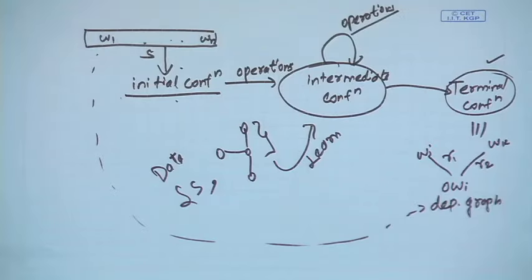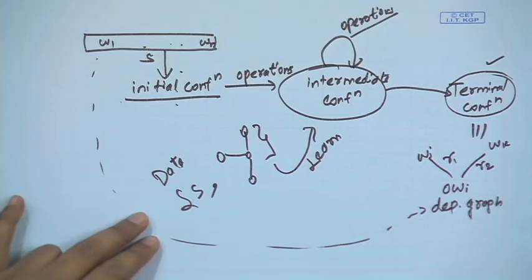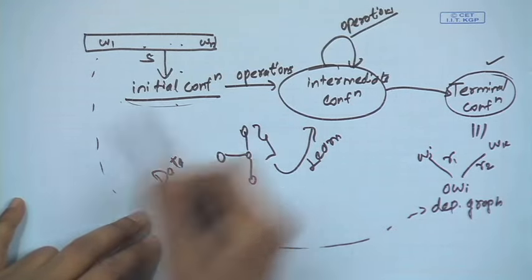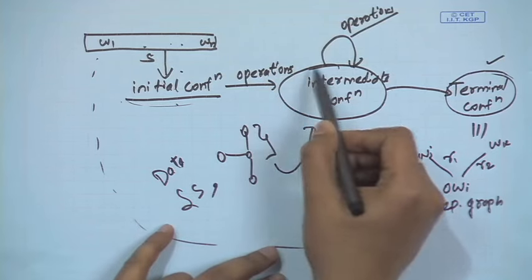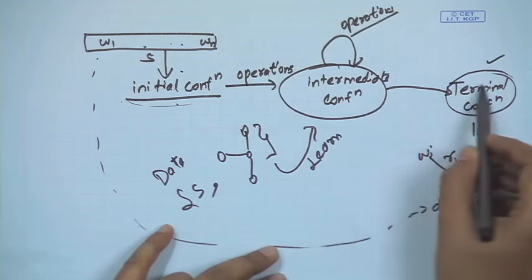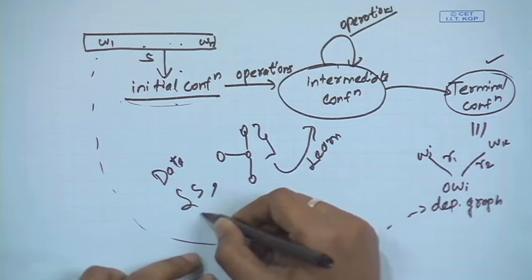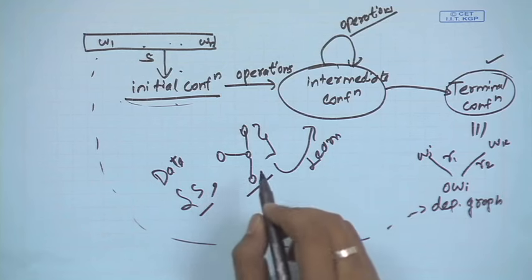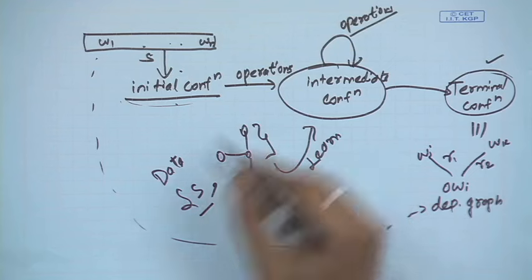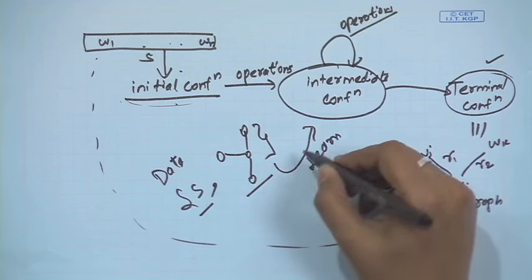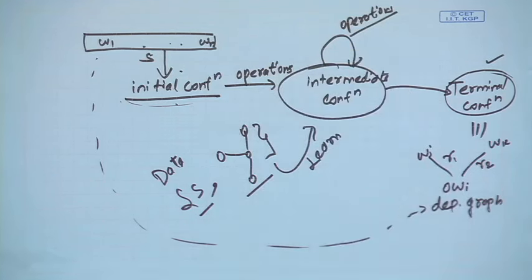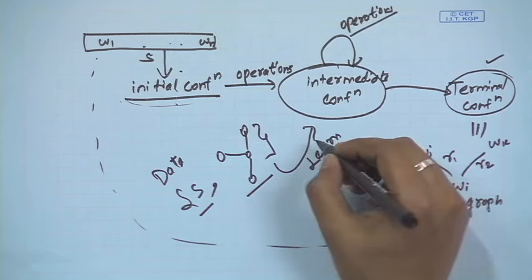So given some sentence, I can find out what the initial configuration is. I keep on taking some transitions, go to some intermediate configuration, until I obtain the final configuration. With the data, I will have some sentences and their corresponding dependency parses, and from there I will try to learn what transitions I am going to take. In this lecture, we will see how we will be doing the learning part.